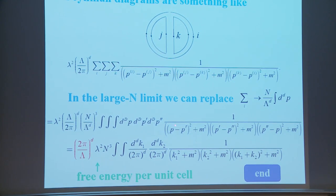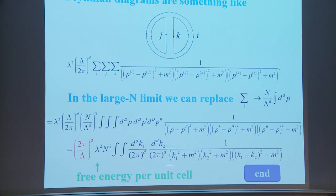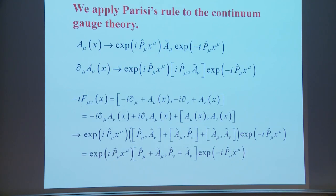We define k1 and k2, and the third momentum becomes k1+k2. We have a momentum integral giving Λ^d, and the result becomes exact — this is precisely the free energy per unit cell.